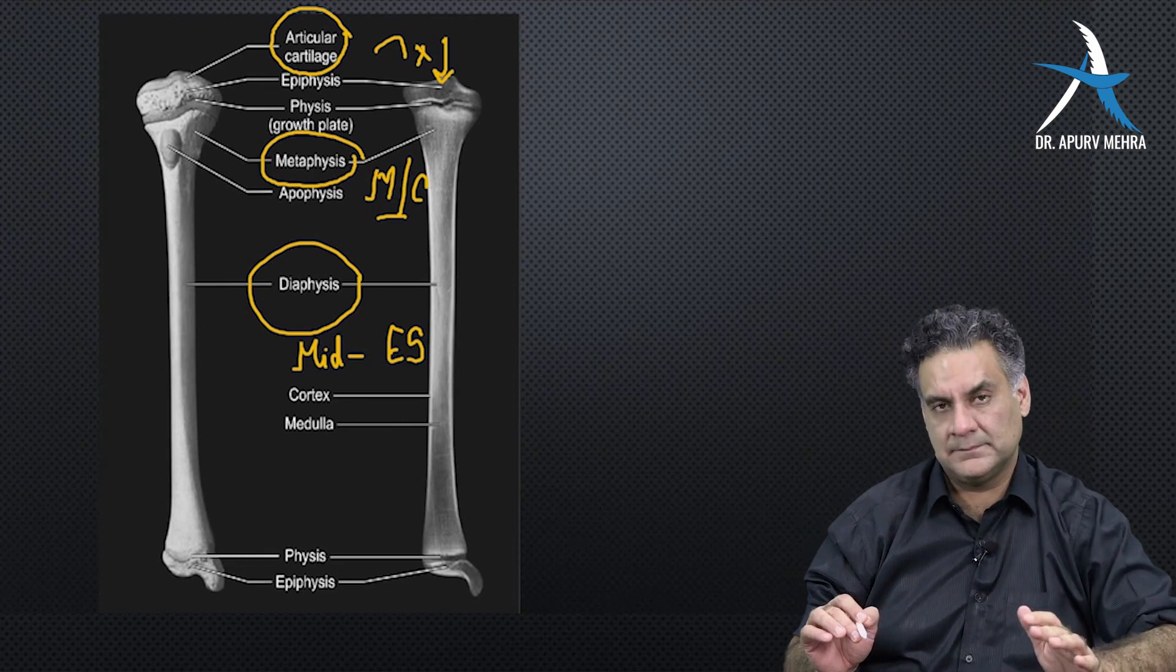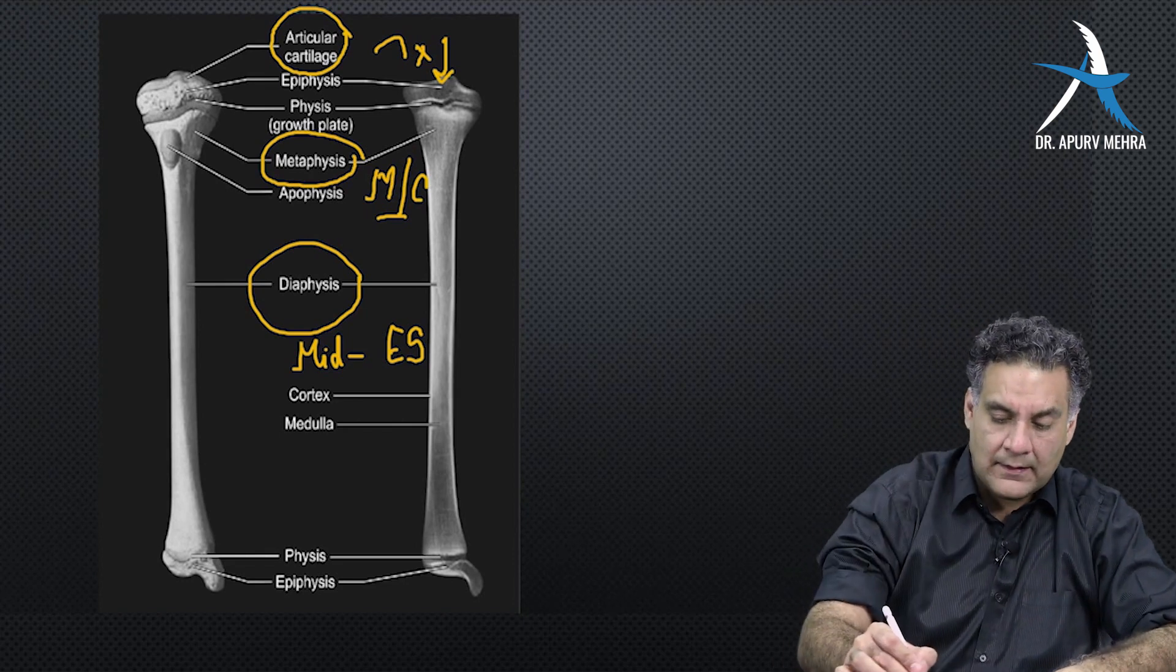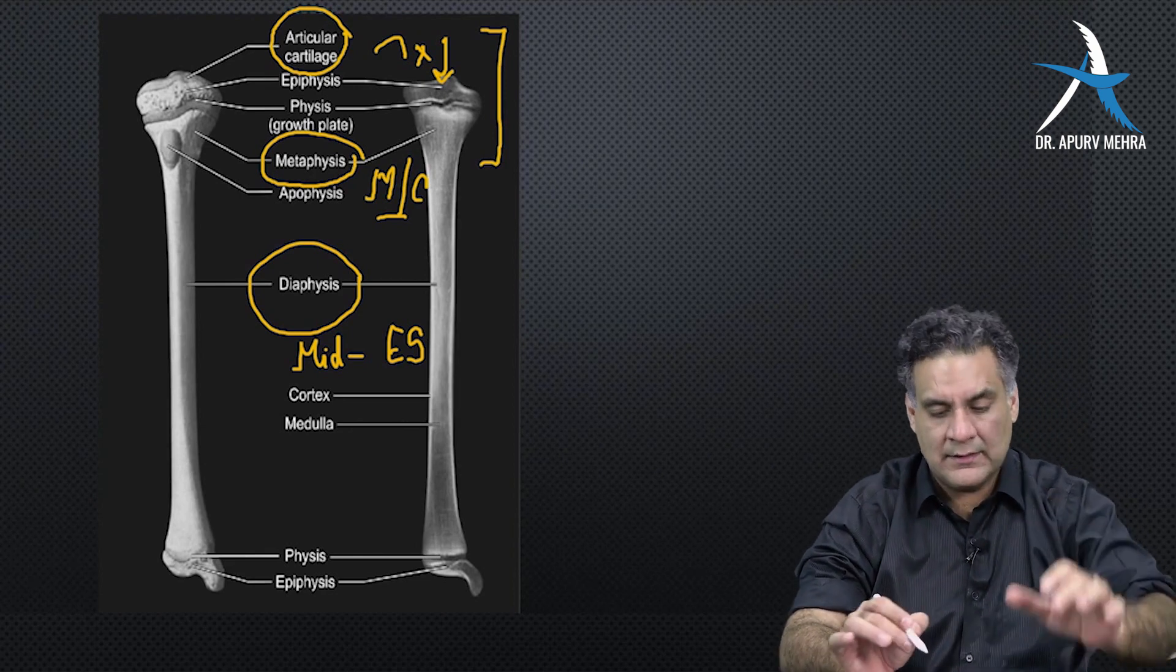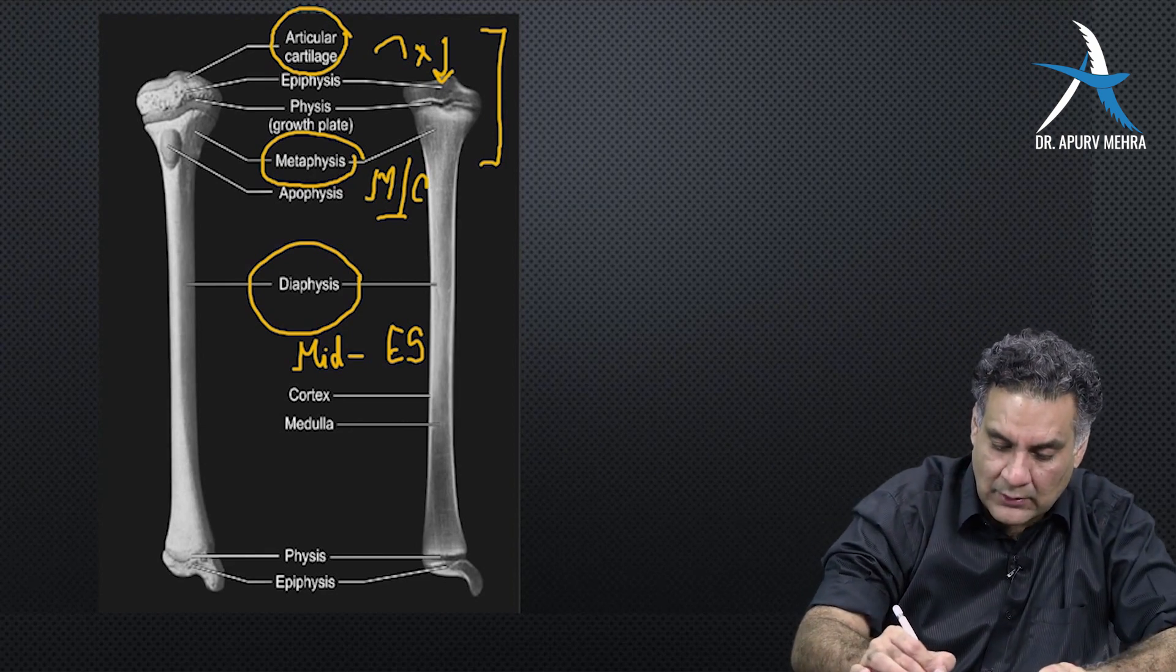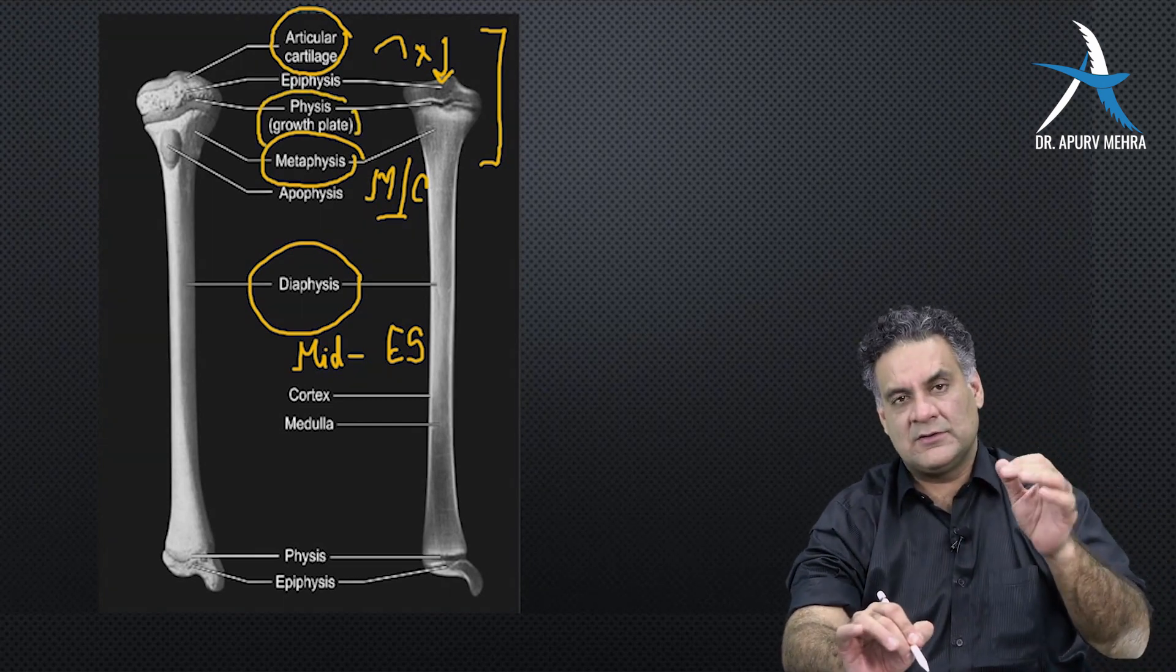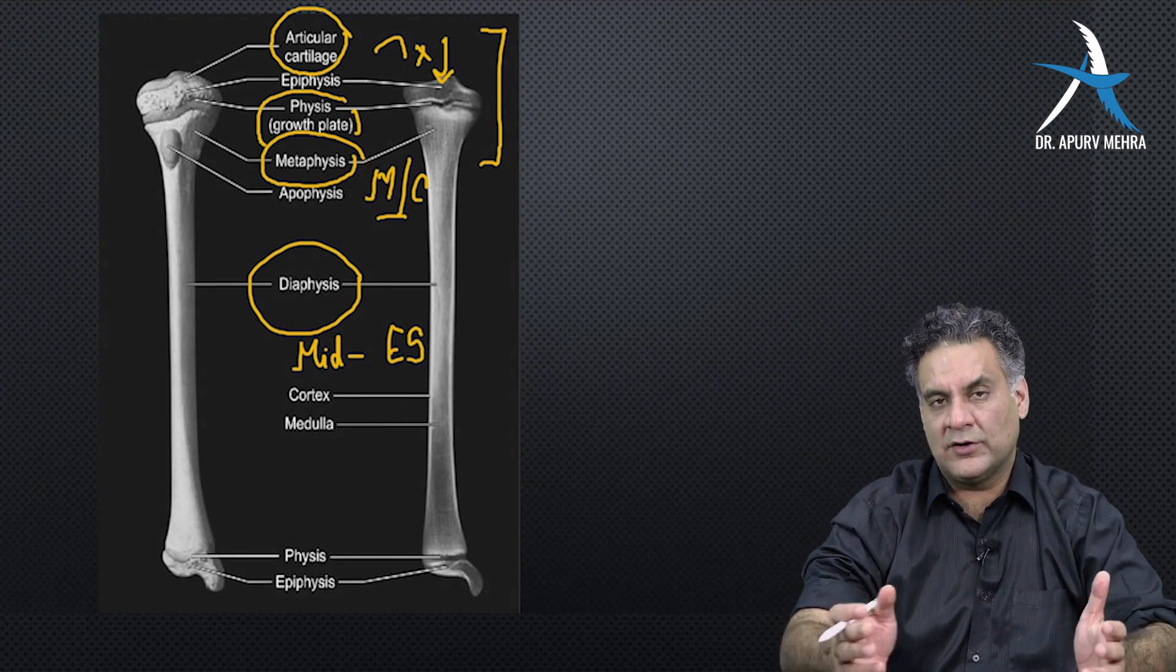The upper end means epiphysis, the metaphysis, and in between is the growth plate called physis. Good thing about physis, it's also made of cartilage, so not seen on x-rays.